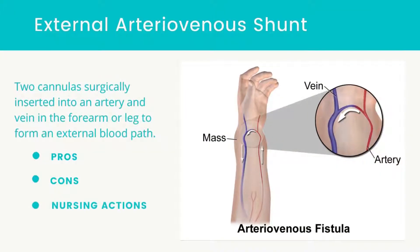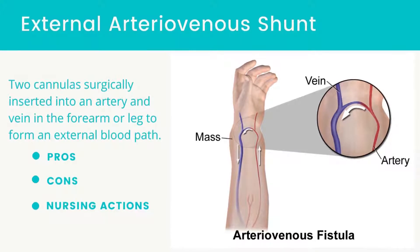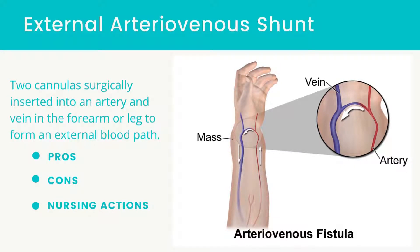An external arteriovenous shunt consists of two cannulas surgically inserted into an artery and vein in the forearm or leg to form an external blood path. When dialysis is complete, the cannulas are clamped and reattached, forming a U-shape. The pros of an external arteriovenous shunt are that it can be used immediately once placed, and no venipuncture is necessary for dialysis.